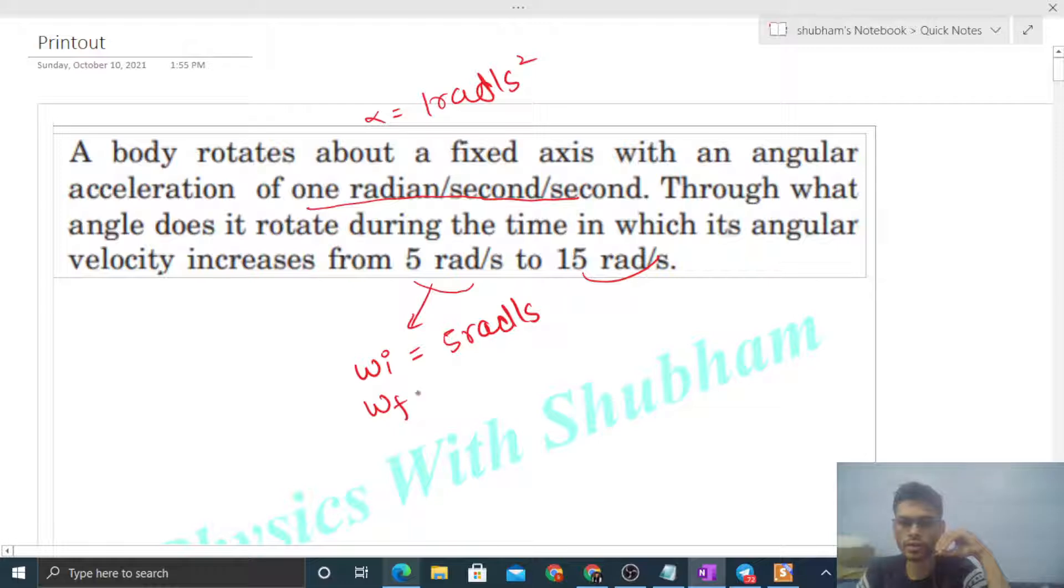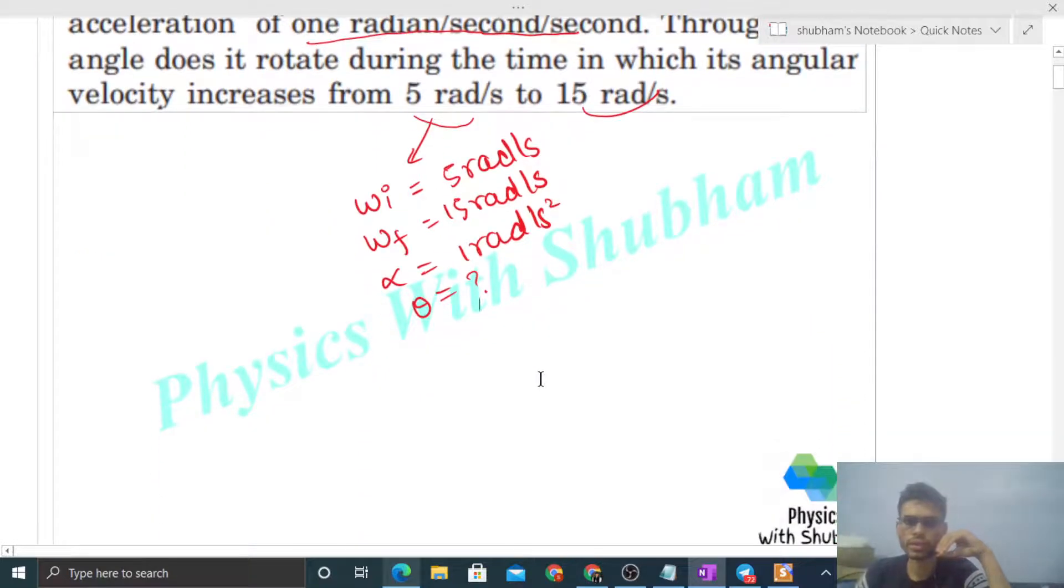And final angular velocity is also given, 15 radian per second. And alpha is given, 1 radian per second square. So you have to find out the angle rotated by this body, right? So how to find out theta?